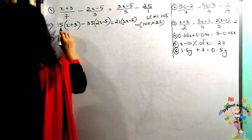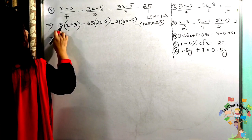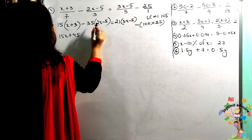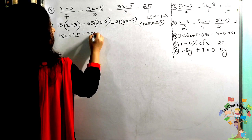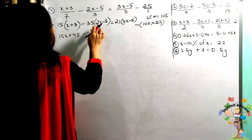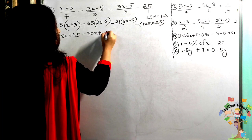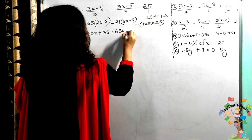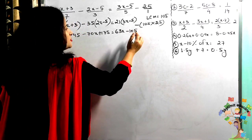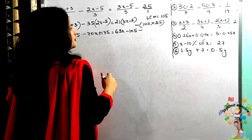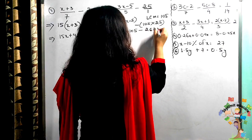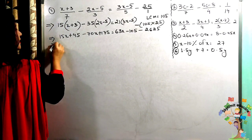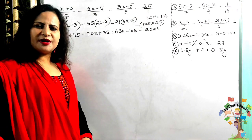Now let us expand: 15 multiplied to (x + 3) gives 15x + 45. Minus 35 multiplied to (2x) gives −70x. Minus 35 multiplied to −5 gives +175. Then we have 63x − 105 on the right side, which equals 2625. Now let us arrange — bring all x terms to the left hand side.